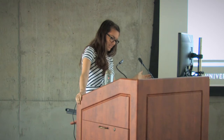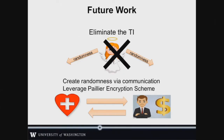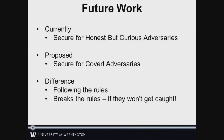So where do we go from here? We want to take our protocol a step further and eliminate the trusted initializer by leveraging a specific encryption scheme and having the parties exchange messages to get the randomness all by themselves. We would also like to move forward from the honest-but-curious model — where parties follow the rules but might do some calculations on the side — to covert adversaries, who will break the rules as long as they won't get caught. And that's about the end of my talk. If you're curious, you can find me at the data center. Thank you.